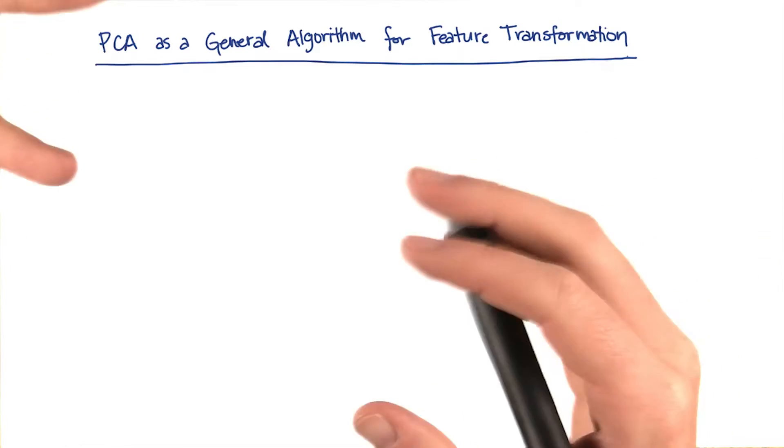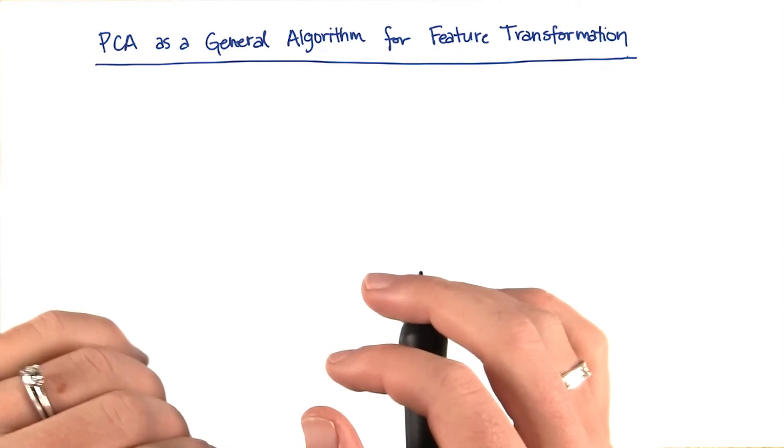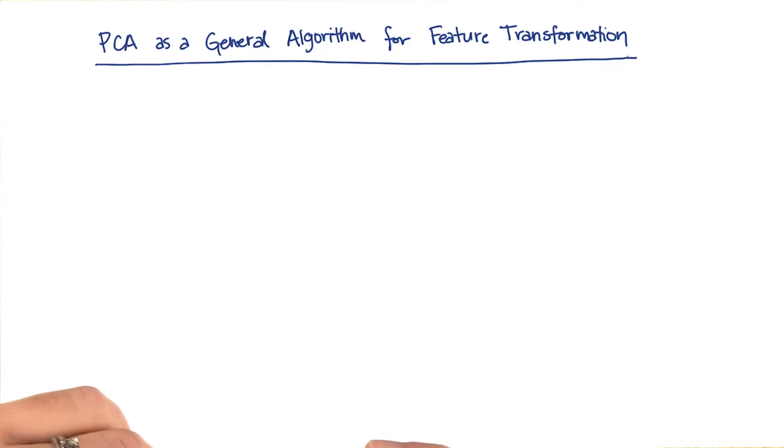Now I think you have a good idea of what PCA generally does. I want to take a step back and talk about it as a general algorithm for feature transformation.